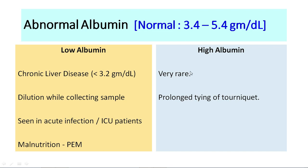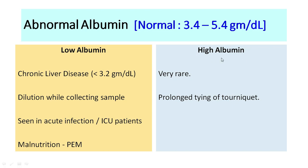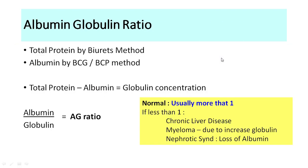High albumin levels are very rare and usually indicate prolonged tying of the tourniquet. They can also be seen in conditions with excess loss of body fluids such as dehydration, shock, diarrhea, or burns, where the remaining blood is more concentrated.